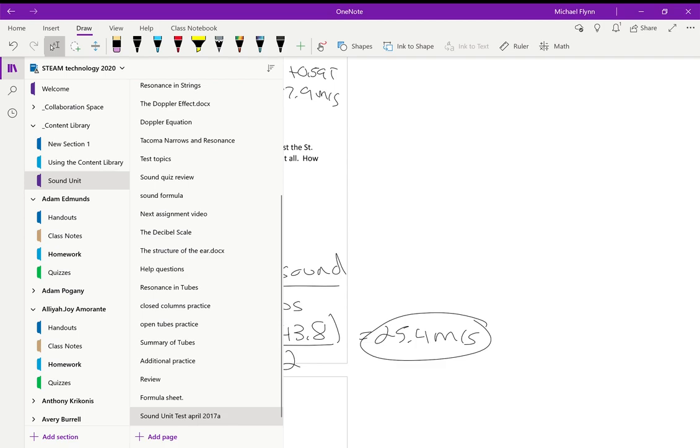But they want the answer in kilometers per hour, so what do I do? I just times that by 3.6 to convert it to kilometers per hour. 25.4 times 3.6 is 91.8 kilometers per hour. That is a dangerous way to drive in a parking lot.